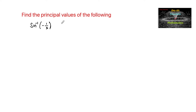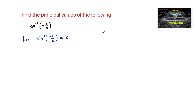Find the principal value of sin inverse of negative 1 by 2. Let us consider sin inverse of minus 1 by 2 is equal to alpha. We know that the principal range of the sin inverse function is minus pi by 2 to plus pi by 2, so our alpha must belong to minus pi by 2 to plus pi by 2.